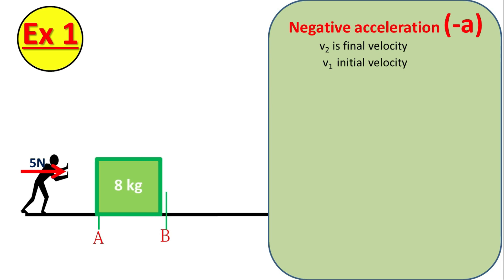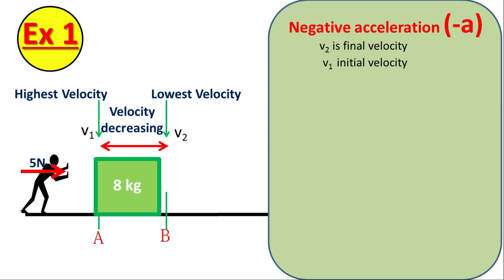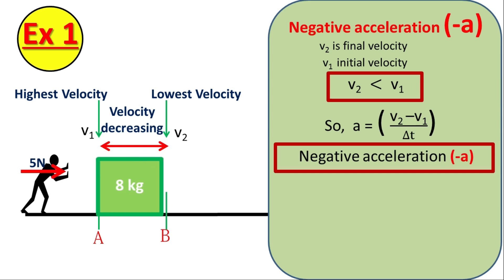Now another question. In the same example, object is having highest velocity at point A and at point B velocity is 0. It means velocity is continuously decreasing. That means object is not accelerating but decelerating. Thus, for any time interval between point A and point B, acceleration will be negative because final velocity V2 is always less than initial velocity V1. So, according to the formula, value of acceleration will be negative.